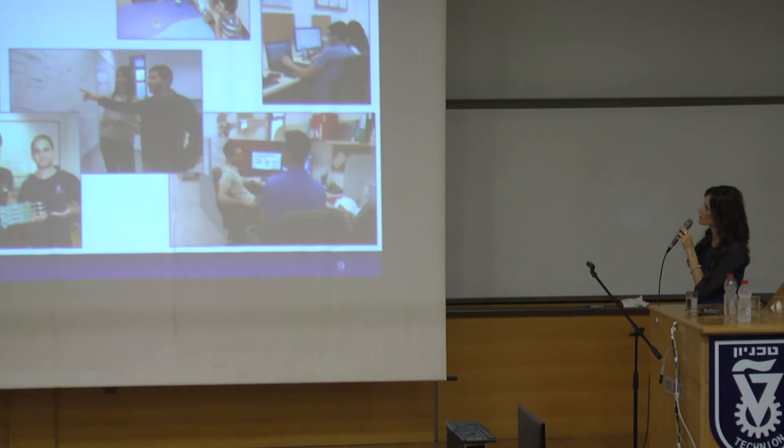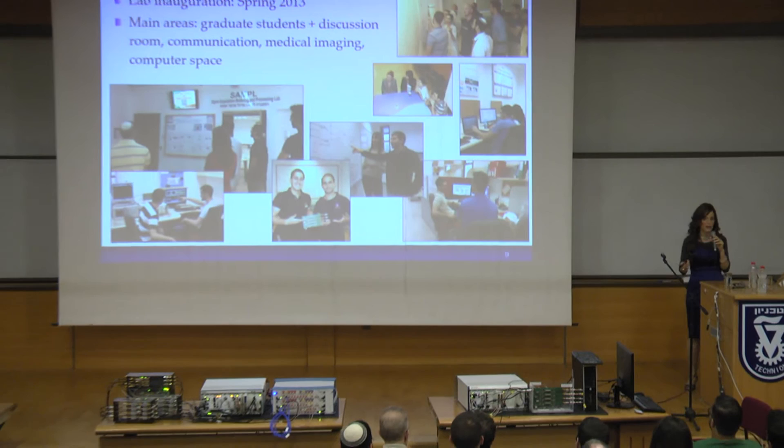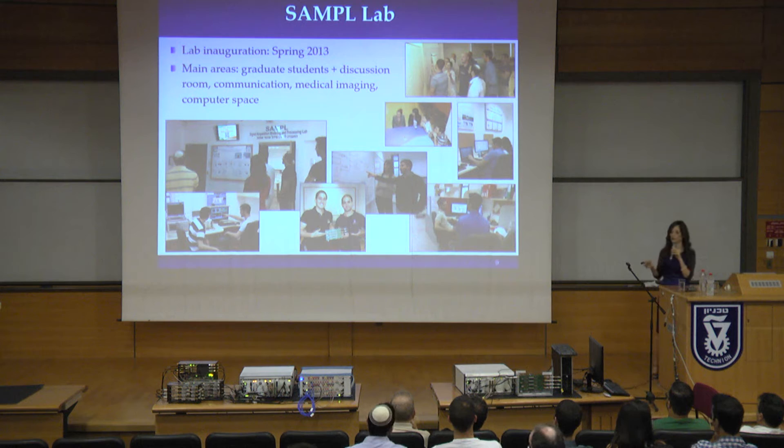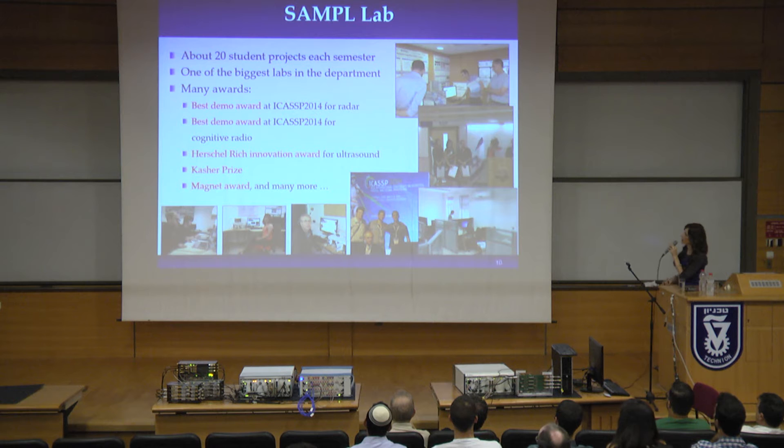Right now, we have four main areas. One area is devoted to the graduate students and a seminar room where we have all of our brainstorming sessions. Another room is devoted to communications and radar. Another room is devoted to medical imaging. And finally, we have one room of computer space where the undergraduate students could think quietly and further develop the algorithms.